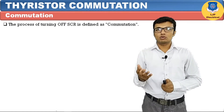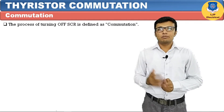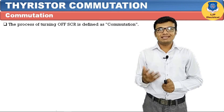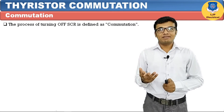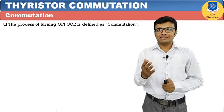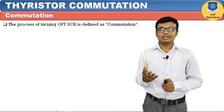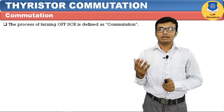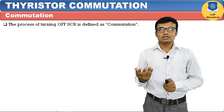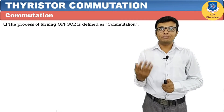The process to turn off the SCR is called commutation. An SCR is a device which can be turned on or off by providing a gate pulse. On AC supply it will turn off automatically, but on DC supply we have to provide some external reverse voltage across the SCR such that it will be turned off.